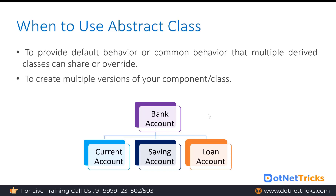All these accounts share common properties like account number, customer ID, address, and contact number. But they have different ways of calculating things such as interest rate. Those methods each class can implement as per their requirement. In simple language, whenever you want to create multiple versions of your component class, you should use the abstract class — for example, current account, saving account, and loan account as versions of the bank account.